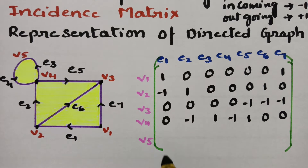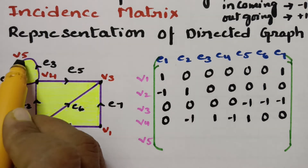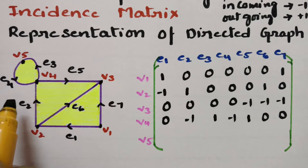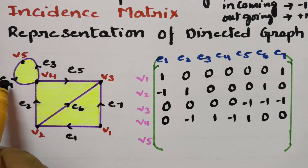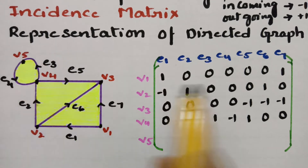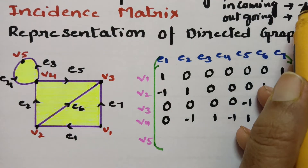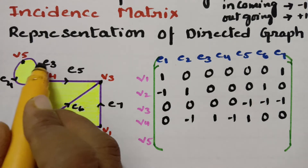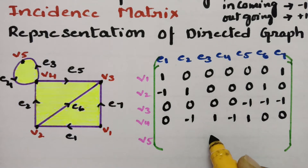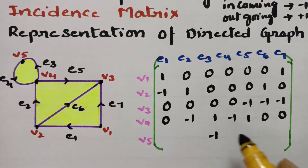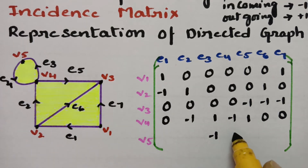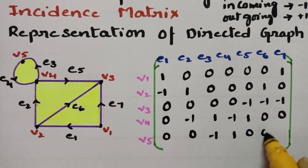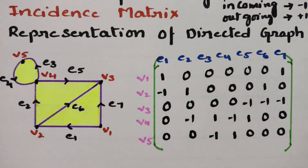Coming to v5, it has only two edges: e3 and e4. e3 is incoming, so we give minus 1. e4 is outgoing, so we represent it with plus 1. There are no other edges, so zeros for the rest.